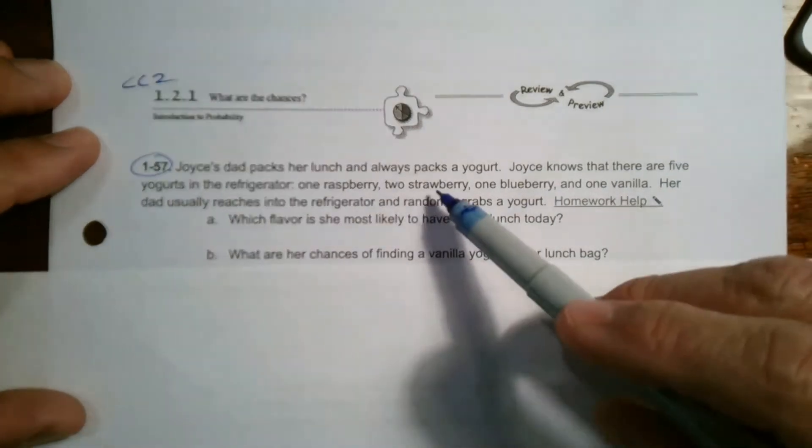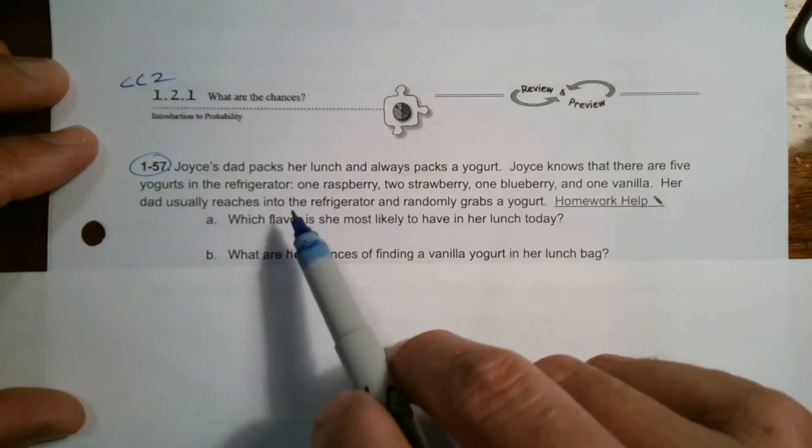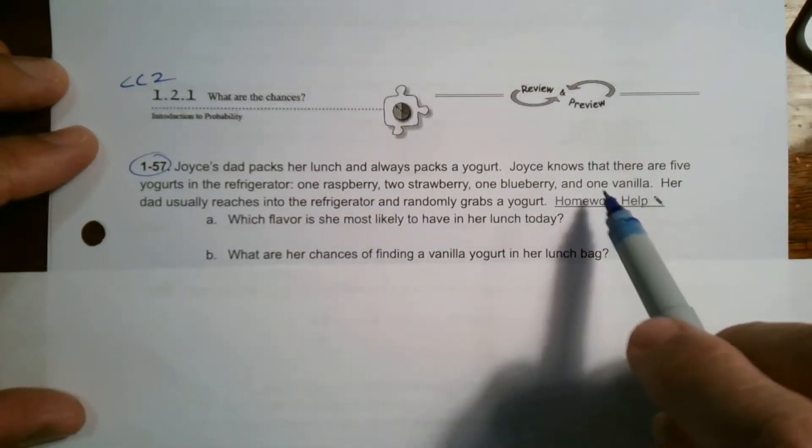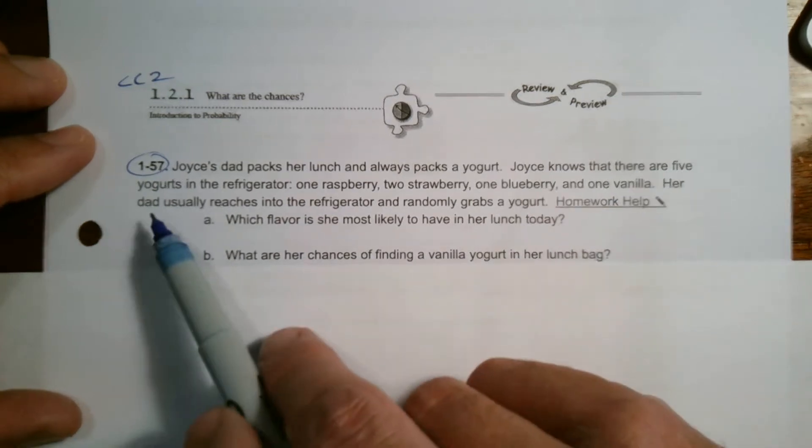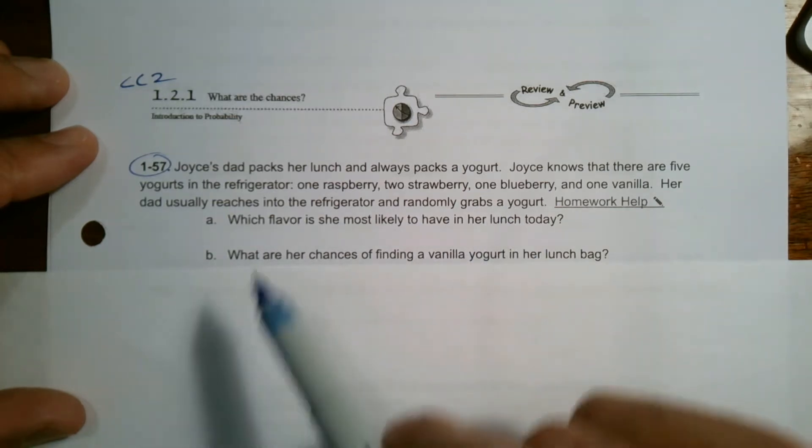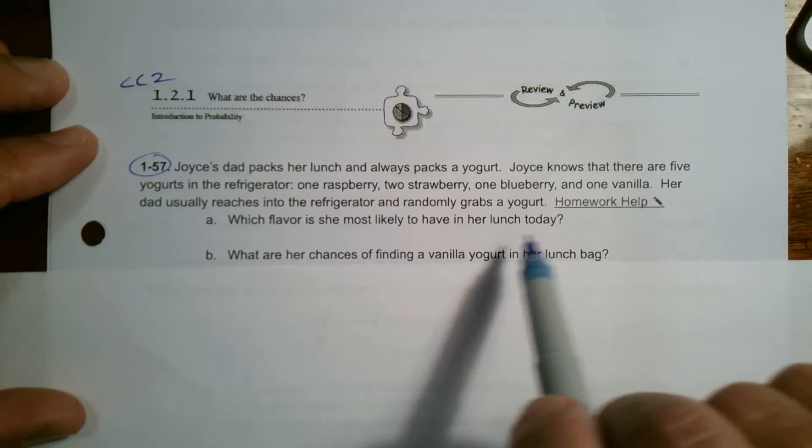Joyce's dad packs her lunch and always packs a yogurt. Joyce knows there are five yogurts in the refrigerator: one raspberry, two strawberry, one blueberry, and one vanilla. Her dad usually reaches in and randomly grabs a yogurt. Question A: which flavor is she most likely to have in her lunch today?